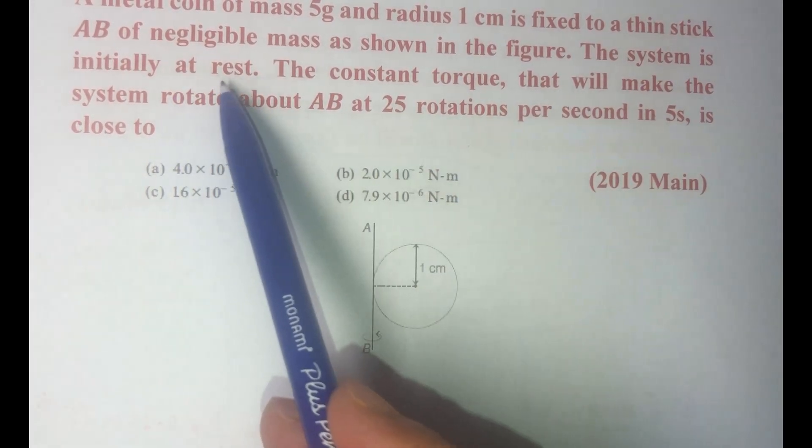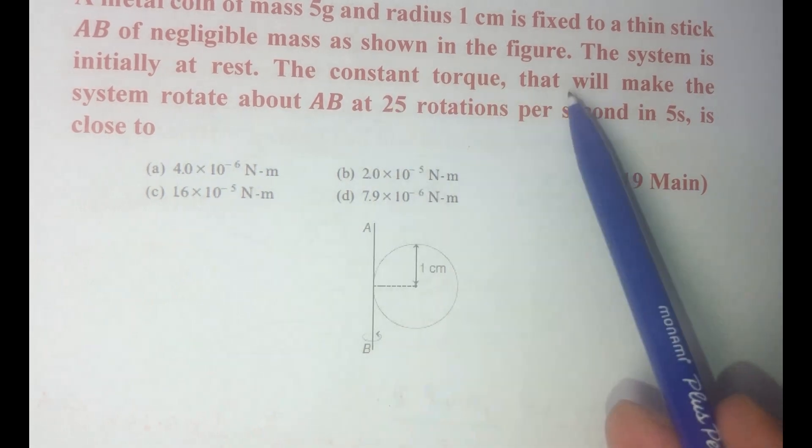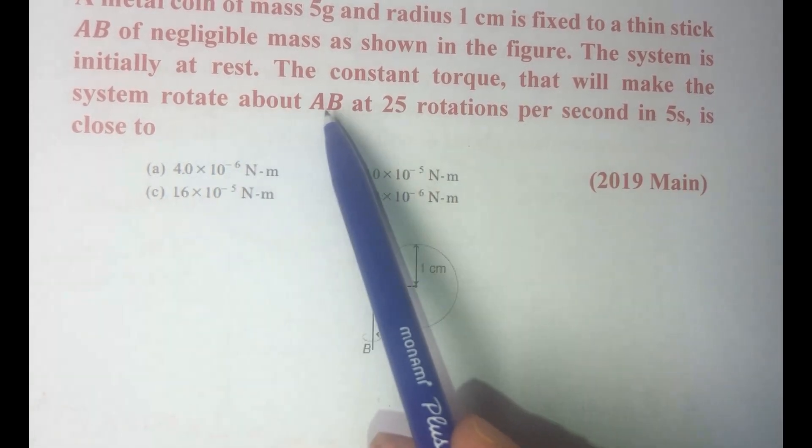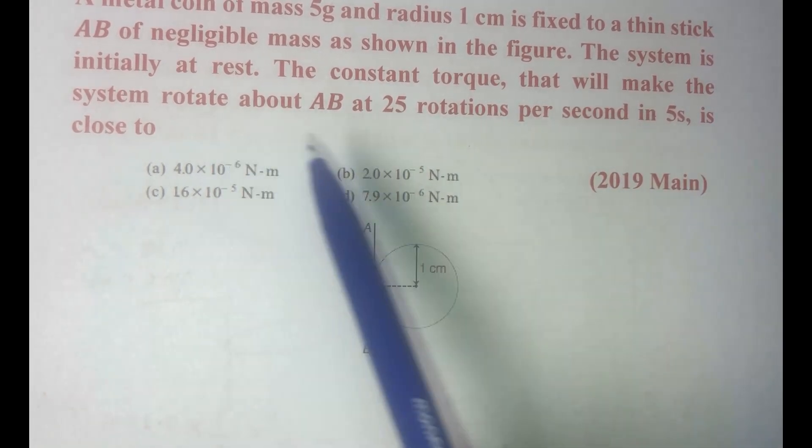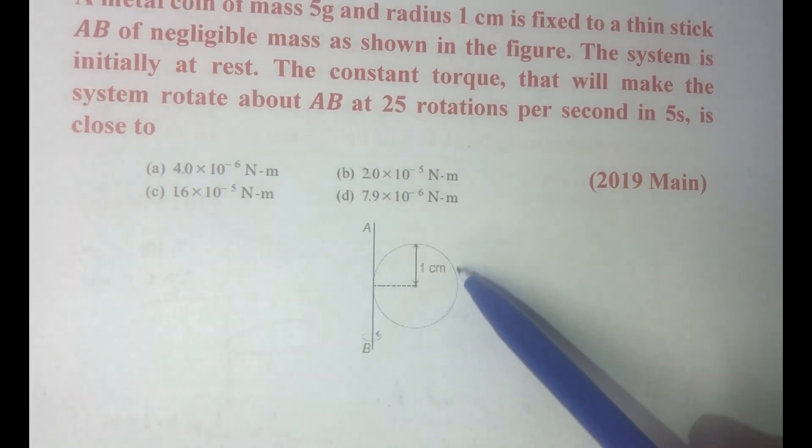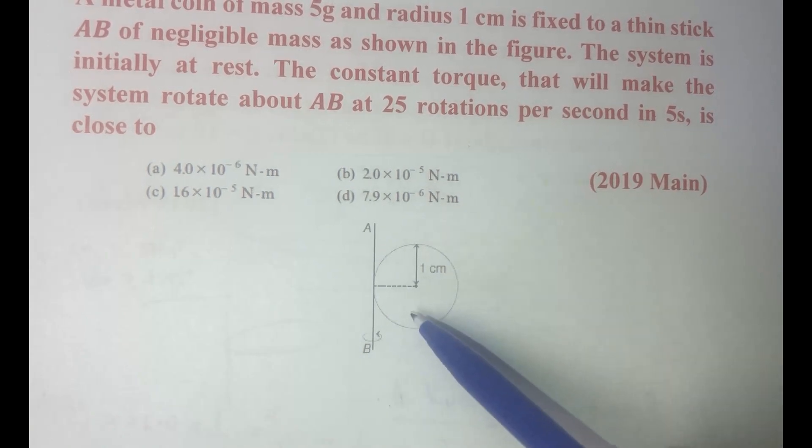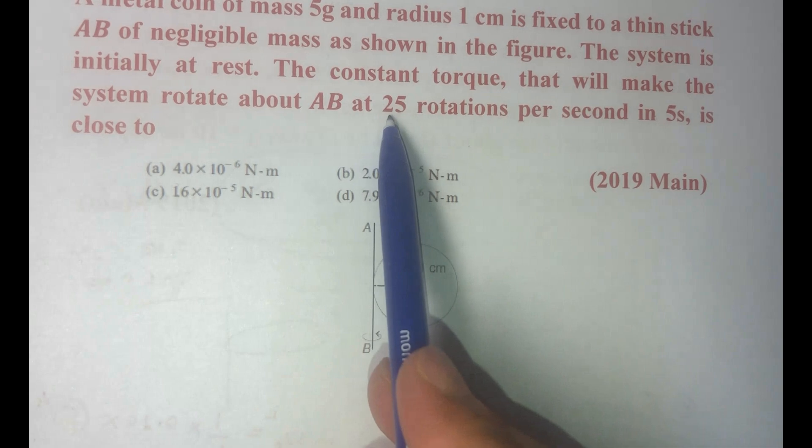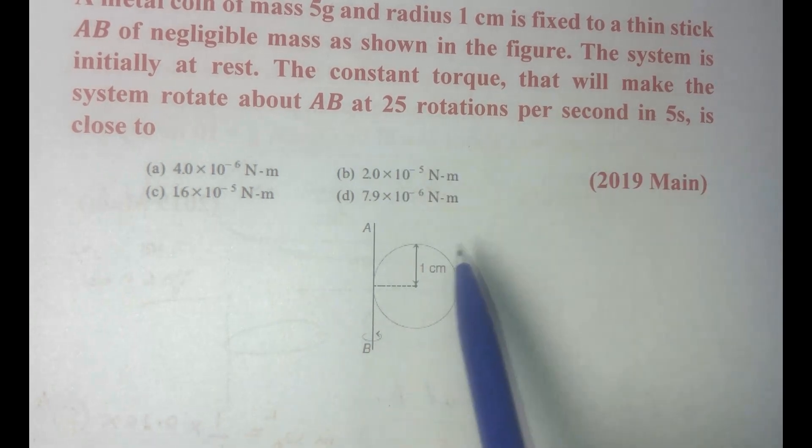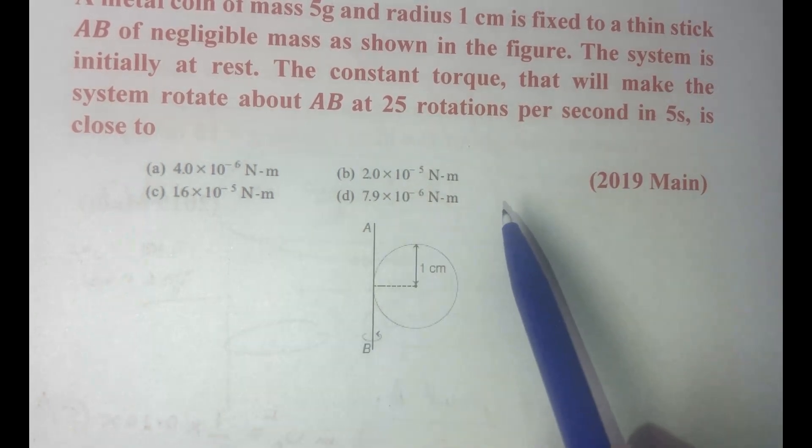The system is initially at rest. The constant torque that will make the system rotate about AB at 25 rotation per second in 5 second is. So we have this stick and metal coin, and a torque is being applied to this metal coin so that it rotates by 25 rotation per second in 5 second and we have to find out that value, the torque.